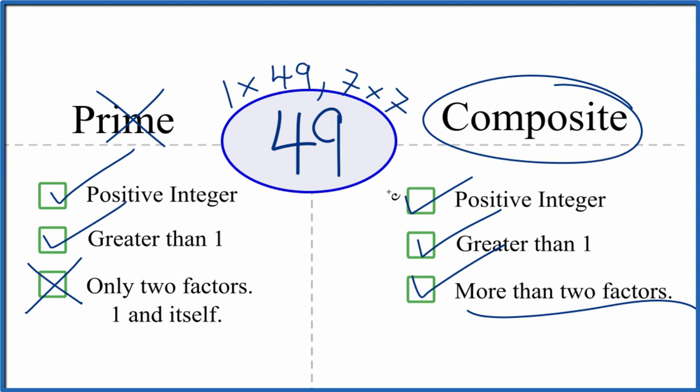So in answer to the question whether 49 is prime or composite, it's composite. Thanks for watching.